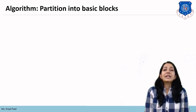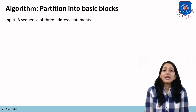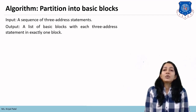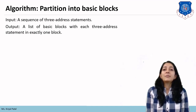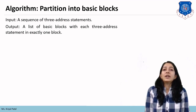Now, how to partition the three-address code into basic blocks. The input is a sequence of three-address statements, and the output is a list of basic blocks with each three-address statement in exactly one block. When we pass a sequence of three-address statements, we want a basic block with each three-address statement in exactly one block.